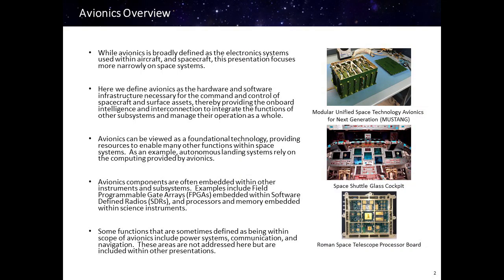First, a definition of avionics. Avionics is broadly defined as the electronic systems within aircraft and spacecraft. However, this presentation will focus more narrowly on space systems. Here we define avionics as the hardware and software infrastructure necessary for the command and control of spacecraft and surface assets, providing the onboard intelligence and interconnection to integrate the functions of other subsystems and manage their operation as a whole. Avionics can be viewed as a foundational technology providing resources to enable many other functions within space systems — one example being autonomous landing systems that rely on the computing resources provided by avionics.